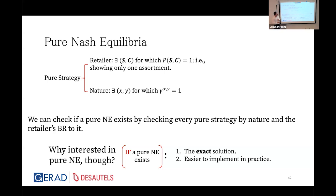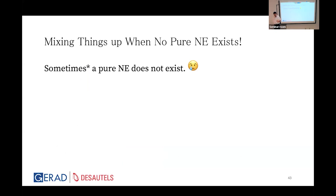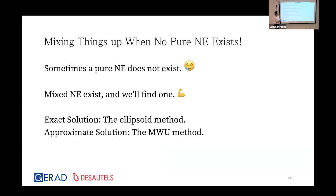Sometimes — typically when lambda is large and we really want to reduce unfairness — a pure Nash equilibrium does not exist. For a finite zero-sum game, a mixed Nash equilibrium always exists, and we can find it either through an exact solution via the ellipsoid method, or approximately through the multiplicative weight update (MWU) method.